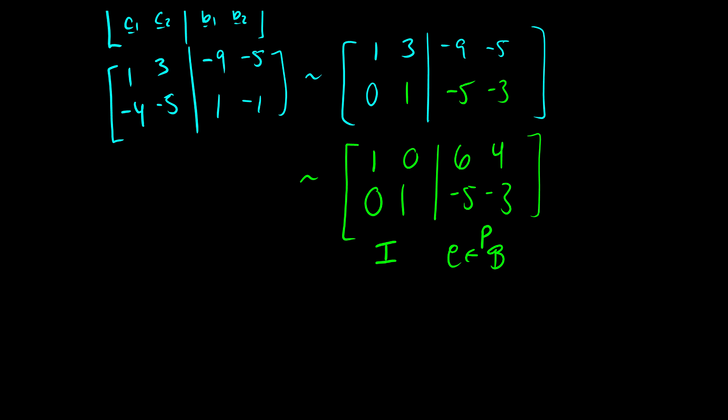So what we're left with is the identity matrix and the change of basis matrix from B to C. So that P from B to C is going to be the matrix 6, 4, negative 5, negative 3.